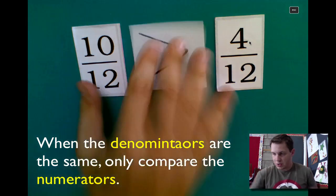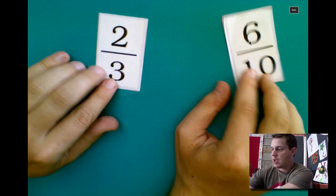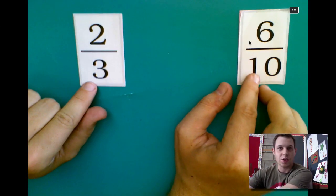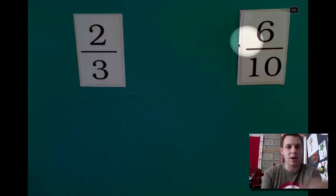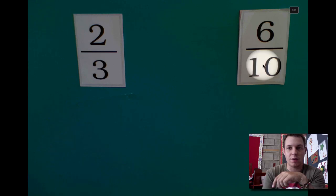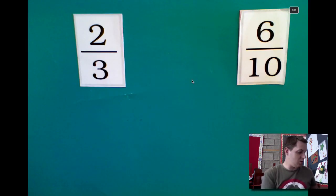Now, some fractions that we need to compare are not going to be so nice to us. For example, let's look at these two. Here we have 2/3 and 6/10. We can see right away that the denominators are very different. Because the denominators are different, we can't just compare them right away. So there are some different tools we can use.